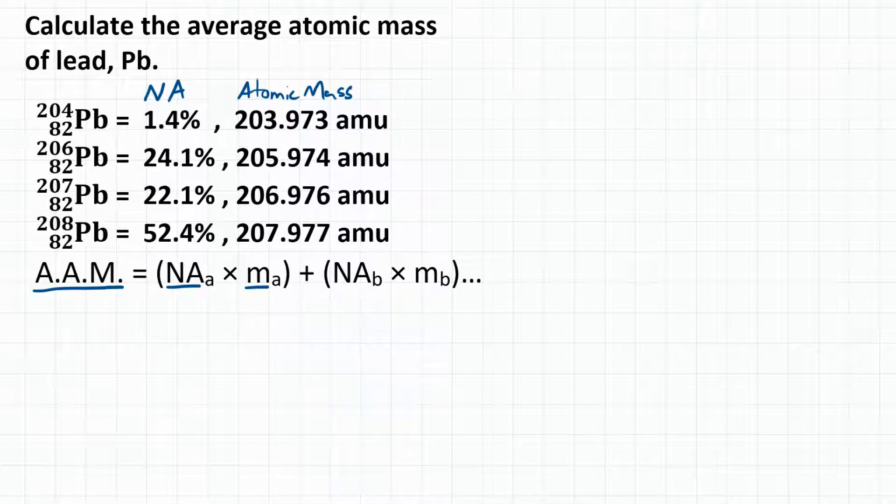So let's plug our values into our equation. For our first isotope, we have lead-204, which has a natural abundance of 1.4% and an atomic mass of 203.973 AMU. We're going to write our natural abundance, but express it as a decimal. So we'll divide by 100 and get 0.014, then multiply by the atomic mass, 203.973.